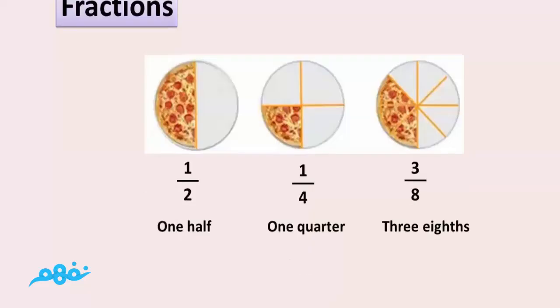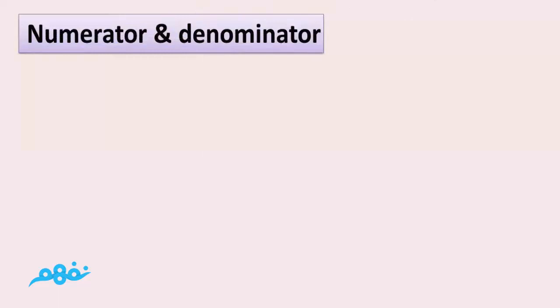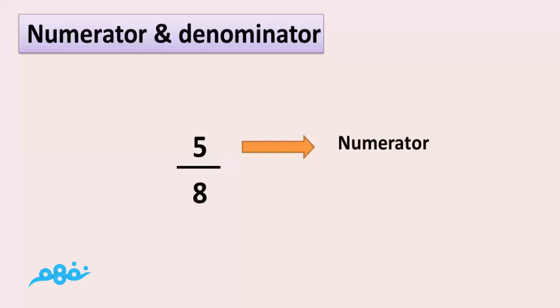In each fraction, we call the top number the numerator, such as 5 — it is the number of parts you have. We call the bottom number the denominator, such as 8 — it is the number of parts the whole is divided into.